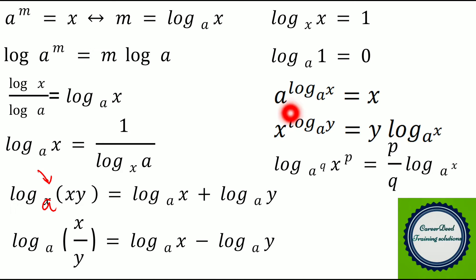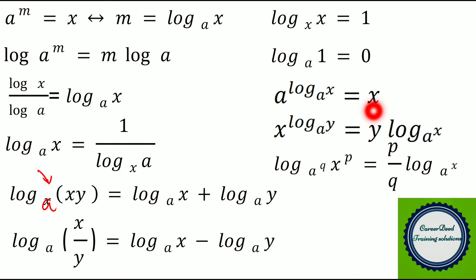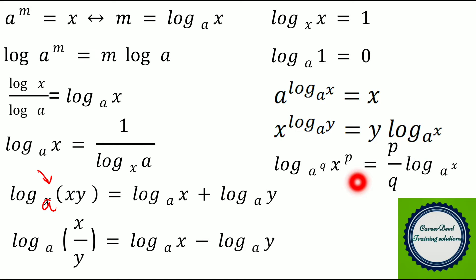Two more important properties: A power log X to the base A is equivalent to X — when the number value and the base value are equal, you write it as X. Next, X power log Y to the base A can be written as Y into log X to the base A. And finally, log of X power P to the base A power Q is equivalent to P by Q times log of X to the base A. Keep these properties in mind to solve any type of logarithm problem in less than one minute.